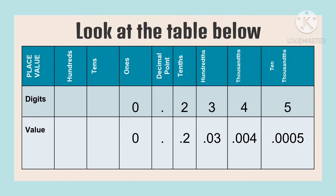The tenths place will be 0. What is the value of digit 4? The value of the digit 4 is 4 thousands. We place two zeros in front of the 4 as the place value holders for the tenths and hundreds places, because the place value of 4 is thousands.